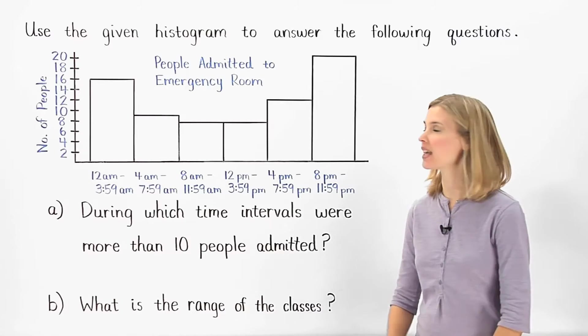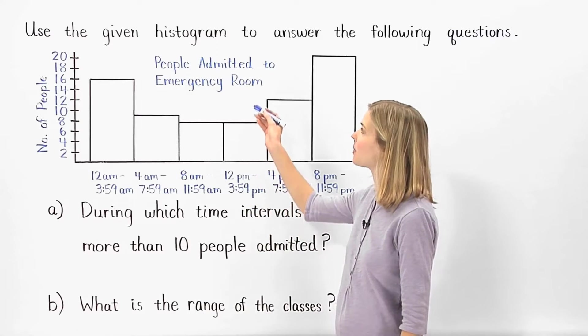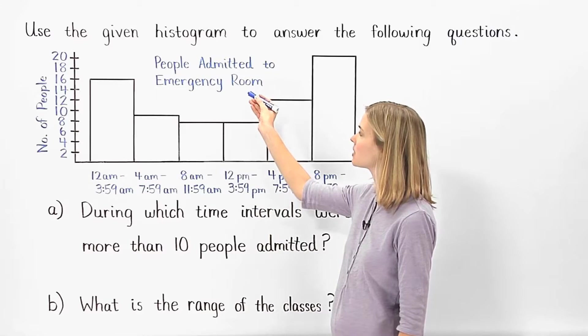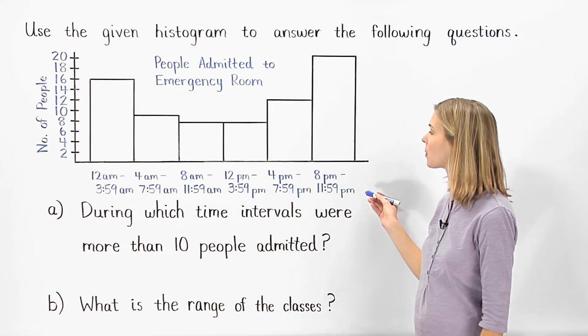In this example, we're given a histogram that shows the number of people admitted to an emergency room during a 24-hour period.